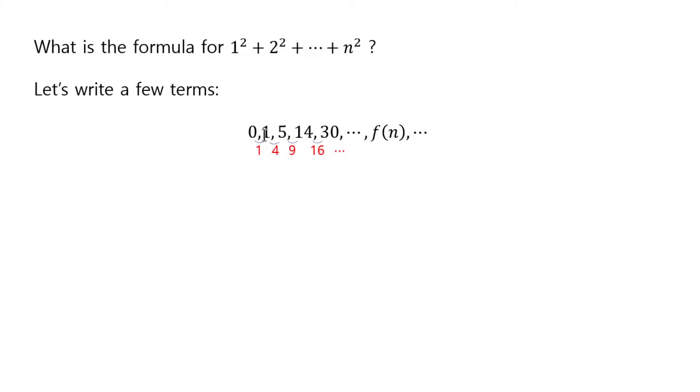So 0 plus 1 squared is 1. 1 plus 2 squared, 2 squared is 4. 1 plus 4 is 5. 5 plus 3 squared, 3 squared is 9. 9 plus 5 is 14. And then you go on and on.